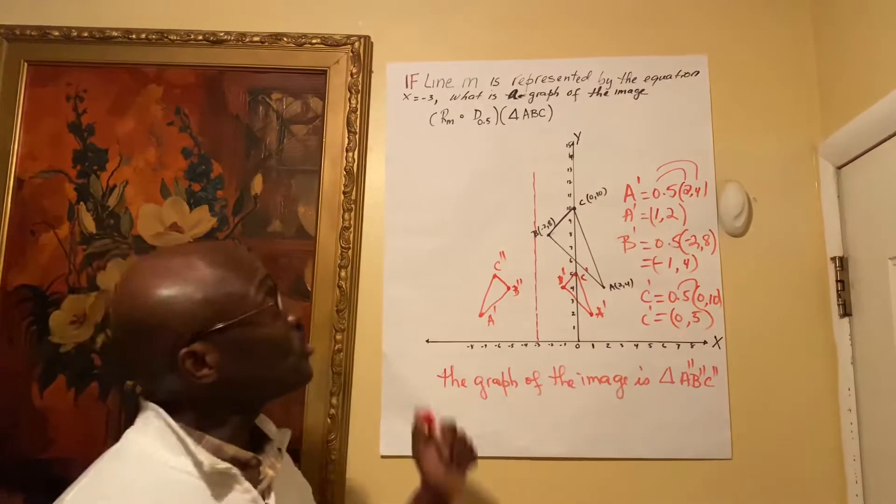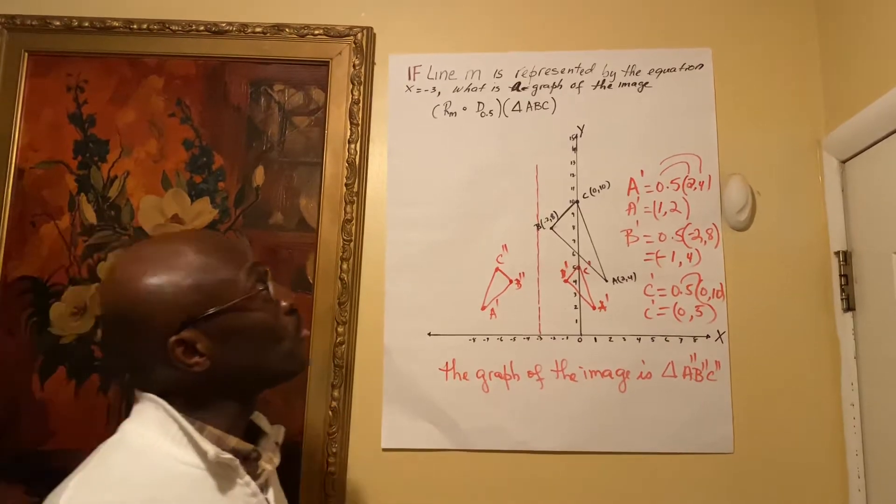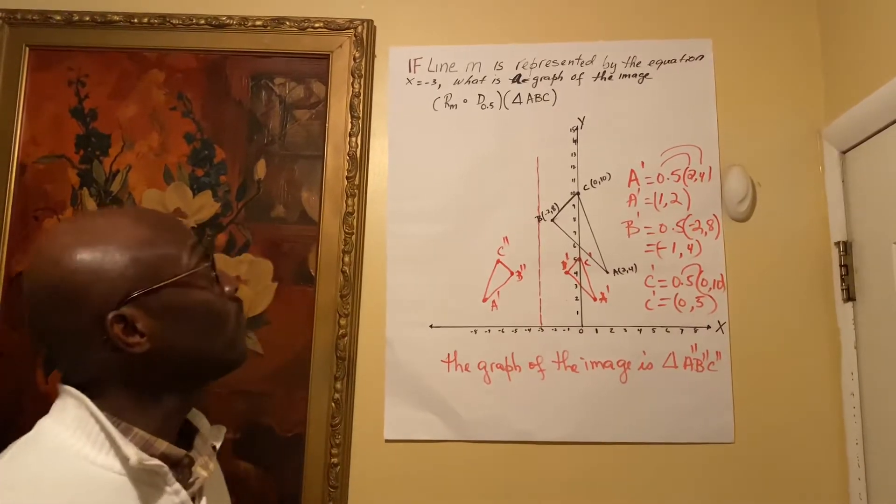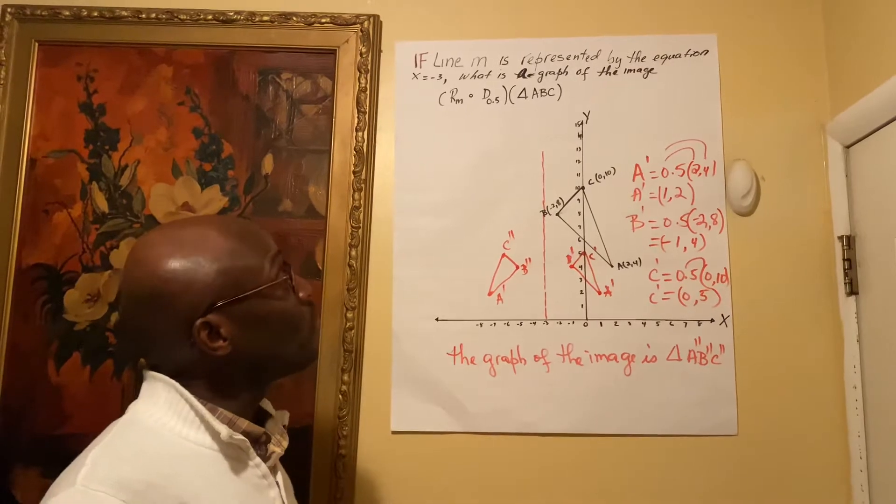We have a composition of a rigid motion and a dilation. The scale factor is 0.5.